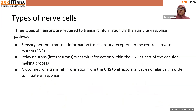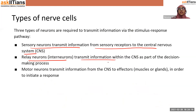Sensory neurons transmit information from sensory receptors to the CNS. Relay neurons, also known as interneurons, transmit information within the CNS as part of the decision-making process. Motor neurons transmit information from the CNS to the effectors, which can be muscles or glands.